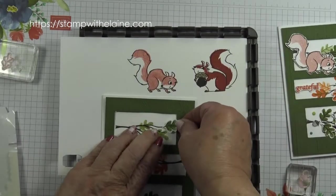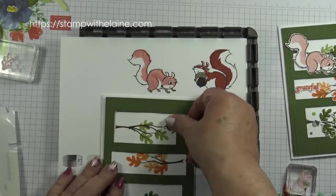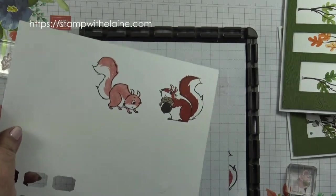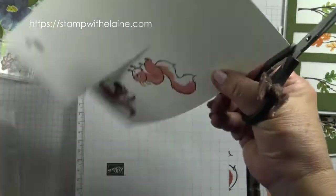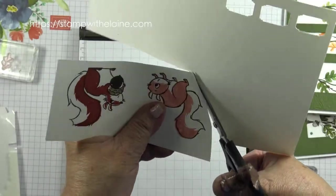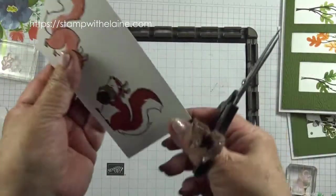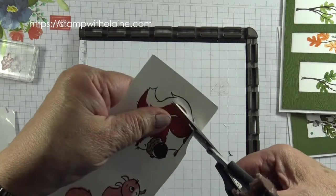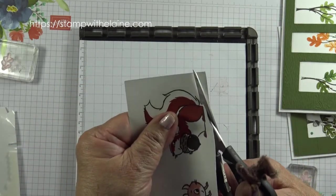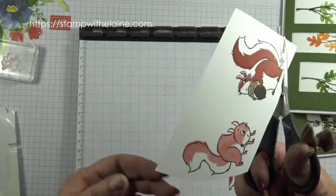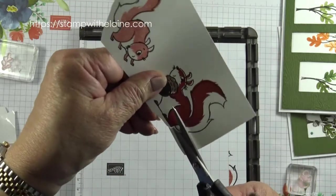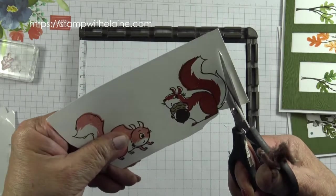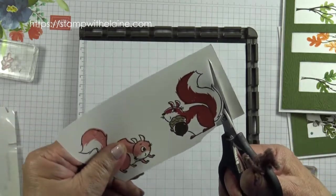Now I need to stamp and fussy cut some extra leaves and cut out the squirrel as well. So I'll do that off camera just to save time. So what you do is you angle your scissors at a 45 degree angle and leave a tiny white border all round and you move the paper instead of the scissors.